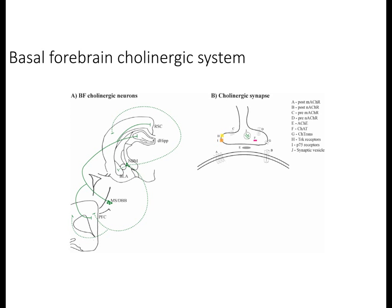This slide summarizes the basal forebrain cholinergic system. In A, we show neural circuits — we are leaving out preoptic cholinergic neurons, as those were not manipulated in the reviewed studies. We show MSDBB cholinergic neurons with projections to the hippocampus and cortical regions, and NBM cholinergic neurons projecting to the neocortex, the entire neocortical mantle, and the amygdala. In B, we show the cholinergic synapse, which expresses neurotrophic receptors such as TRK receptors and a P75 receptor that binds NGF.